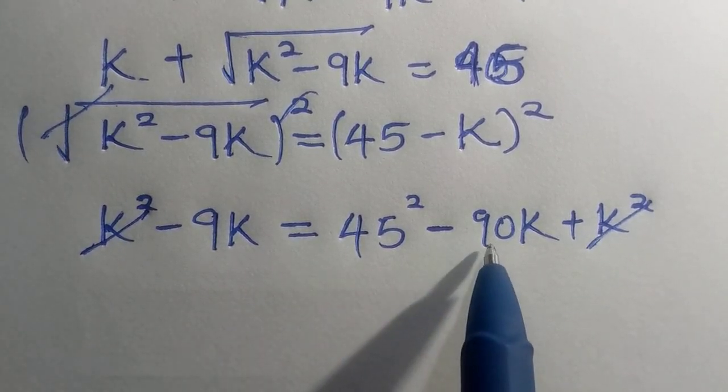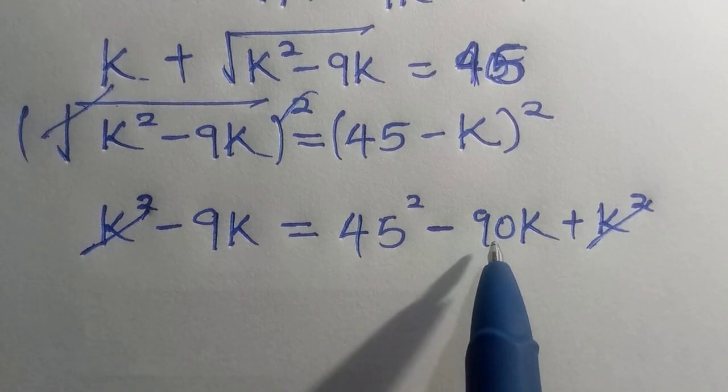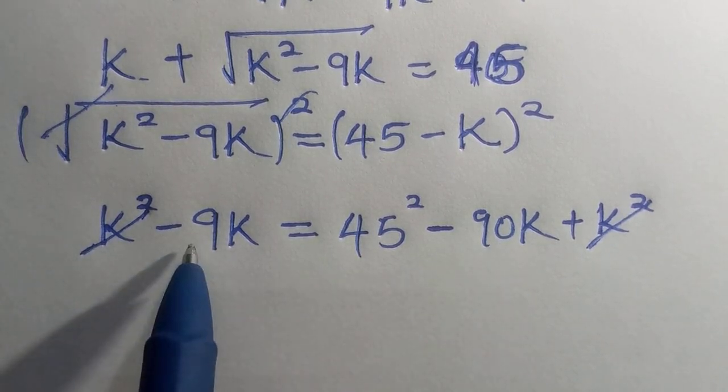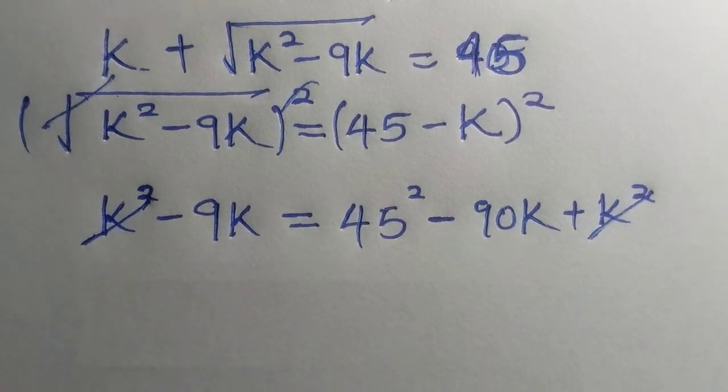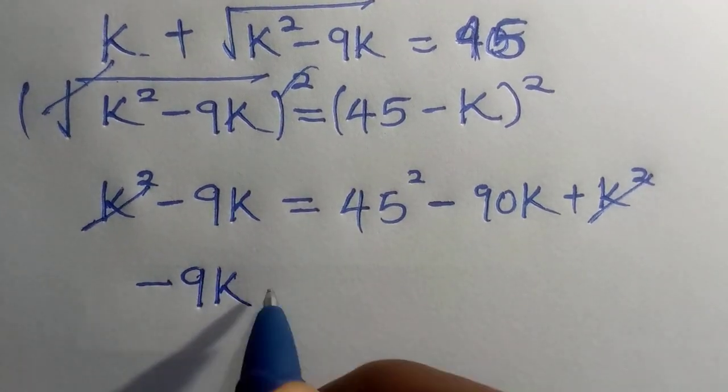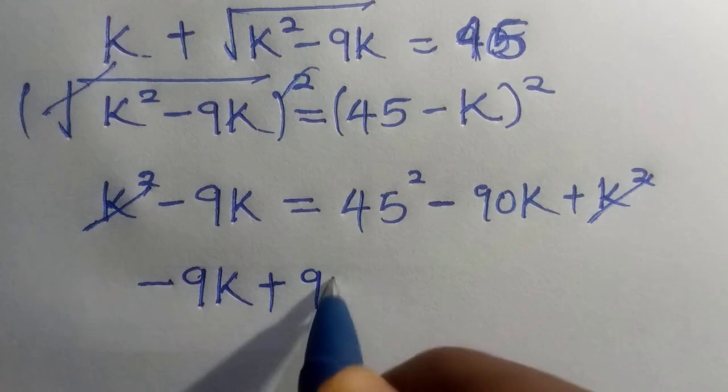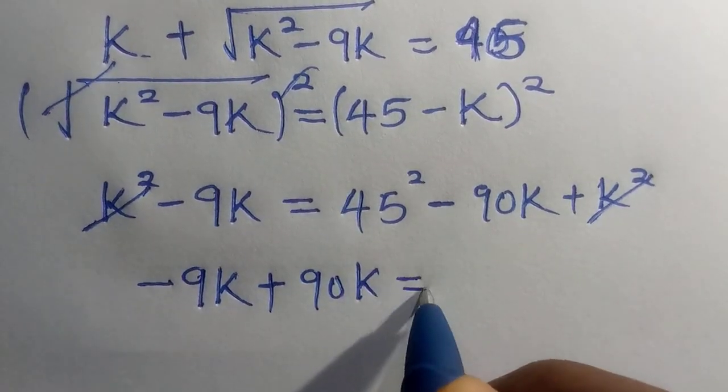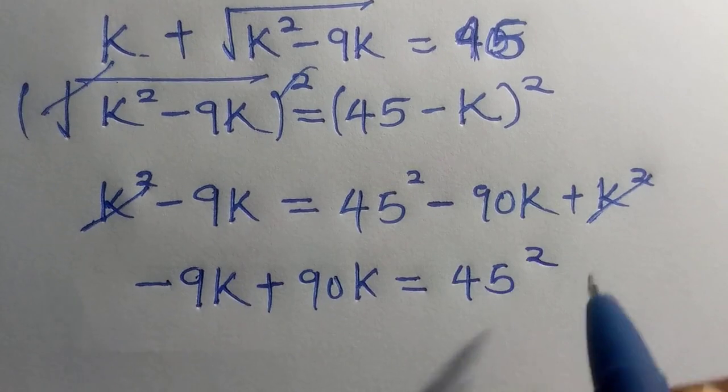And here is minus 90k, and here is plus 9k. Let's try to take 90k to this left hand side. We have minus 9k plus 90k equals 45 square.